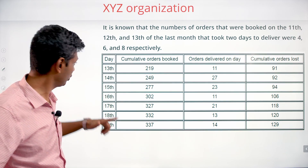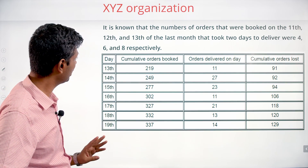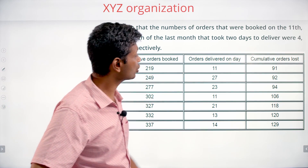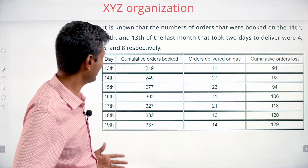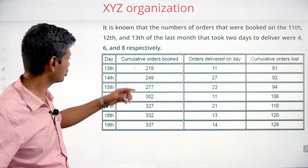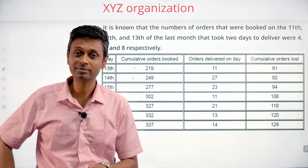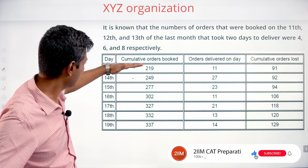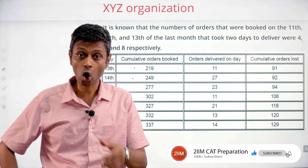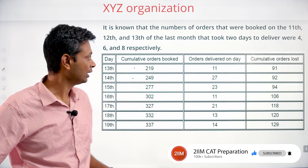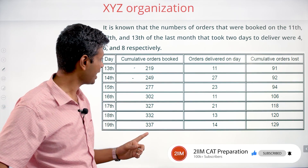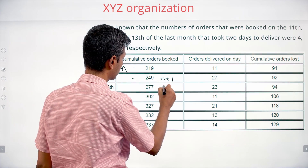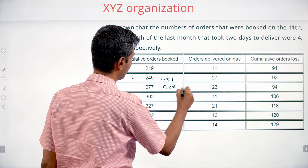Looking at dates 13th to 19th — cumulative orders booked till that date, orders delivered on that day, and cumulative orders lost till that day. I don't like dealing with cumulative numbers. If cumulative till 13th is this much and cumulative till 14th is this much, we can find the 14th number. Orders booked on the nth day are delivered on n+1 or n+2, then marked as lost at the end of n+2 if undelivered.